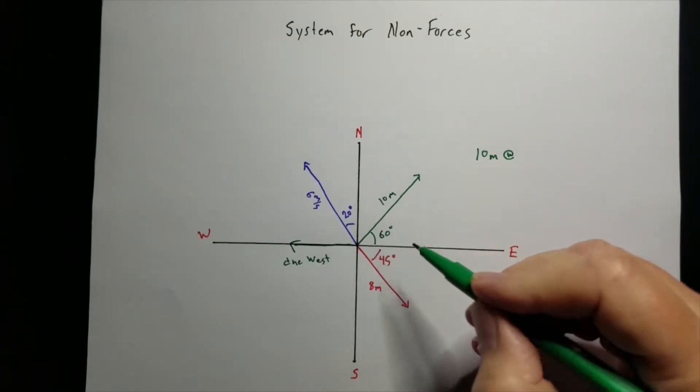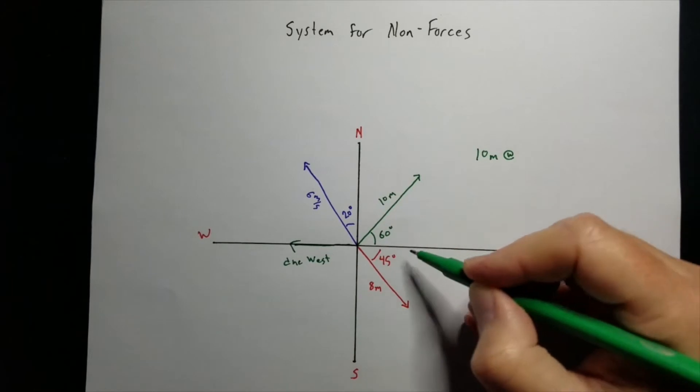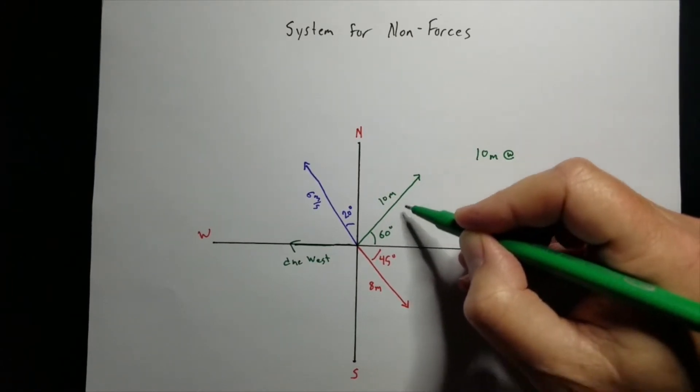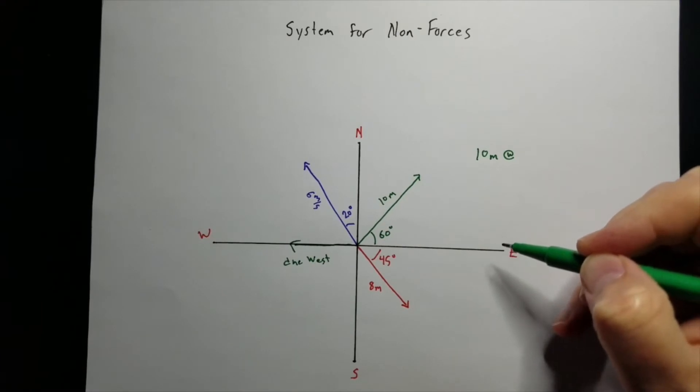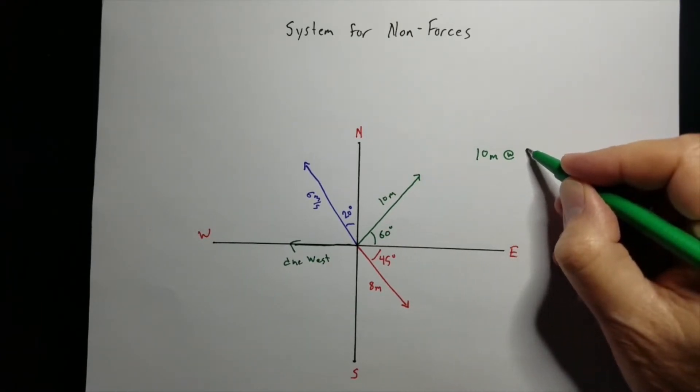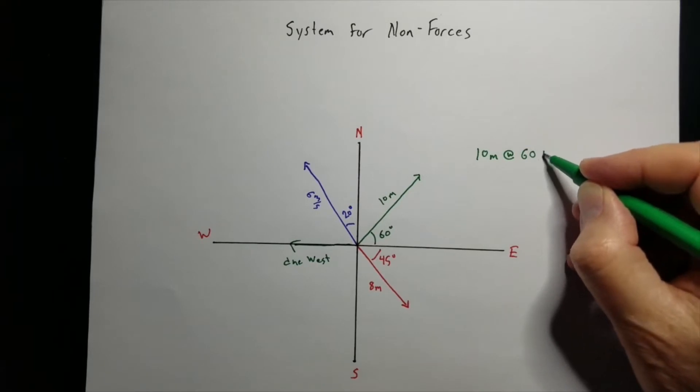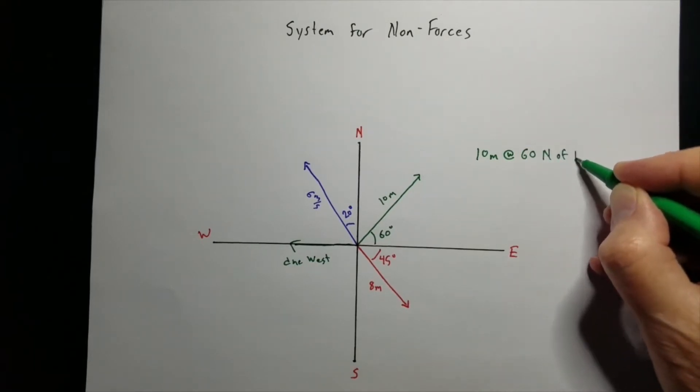Well, we've got an angle here. It's 60 degrees from the east line going up. So it's 60 degrees north of east, north of the east line. So we could just call this 60 degrees north of east.